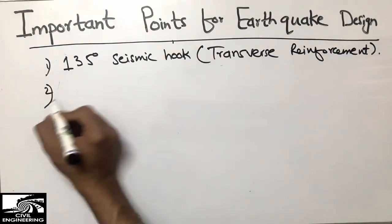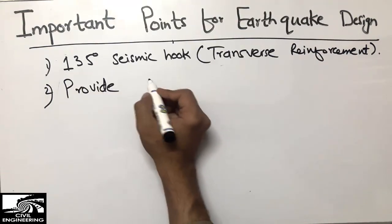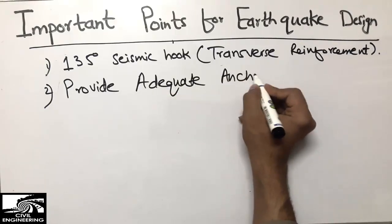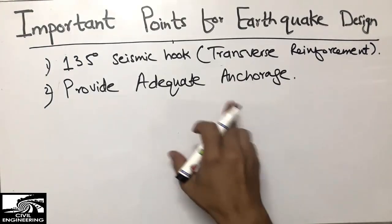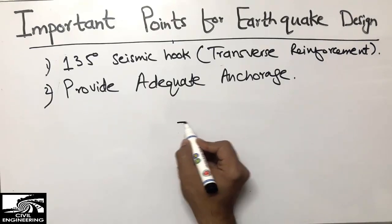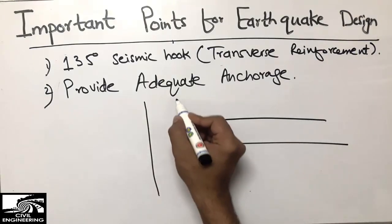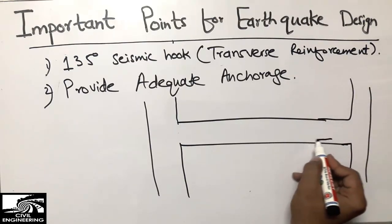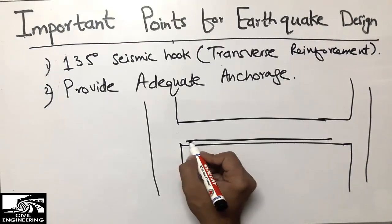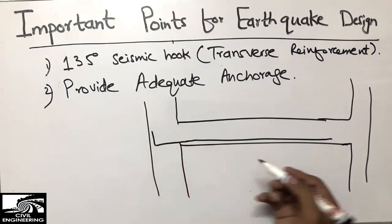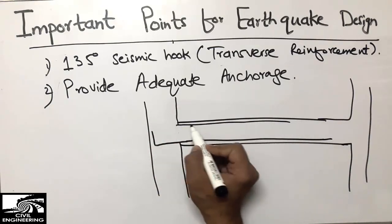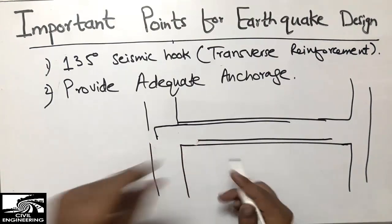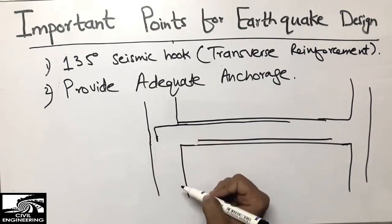The second point is to provide adequate anchorage length. Anchorage length means — for example, taking a beam connected to a column — the reinforcement of the beam is extended and inserted into the column. Similarly, at the top where there is a negative moment, the top reinforcement also extends down into the column.